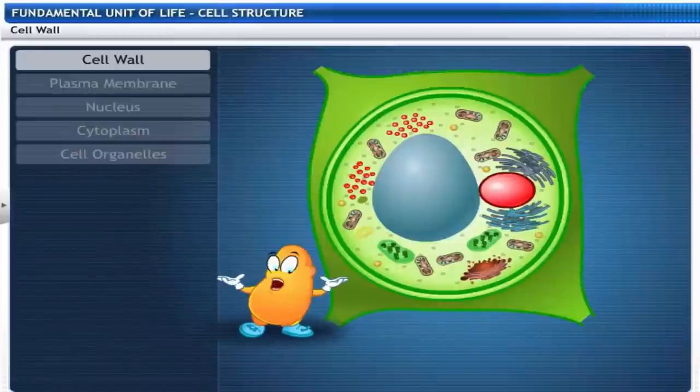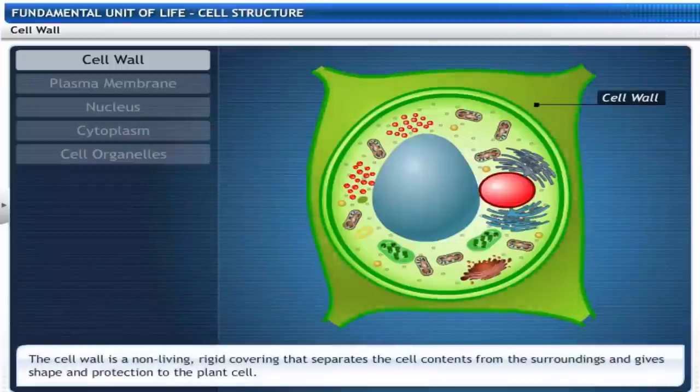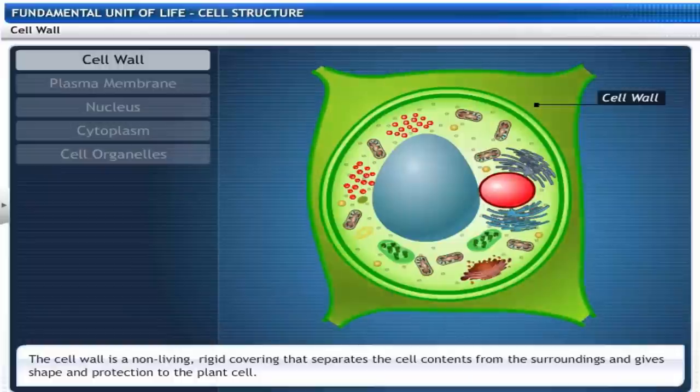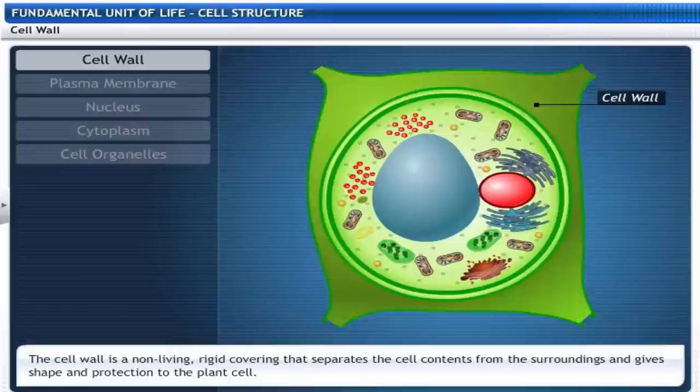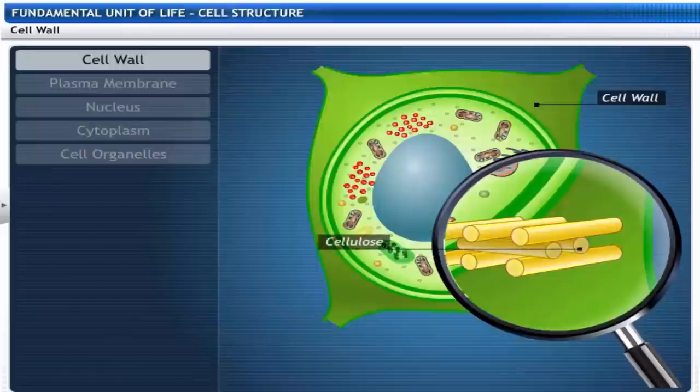Look at the cell. Notice the cell wall. The cell wall is the outermost covering which is non-living and rigid. It is seen only in a plant cell. It separates the cell contents from the surroundings and gives shape and protection to the cell. It is composed of cellulose and is permeable.